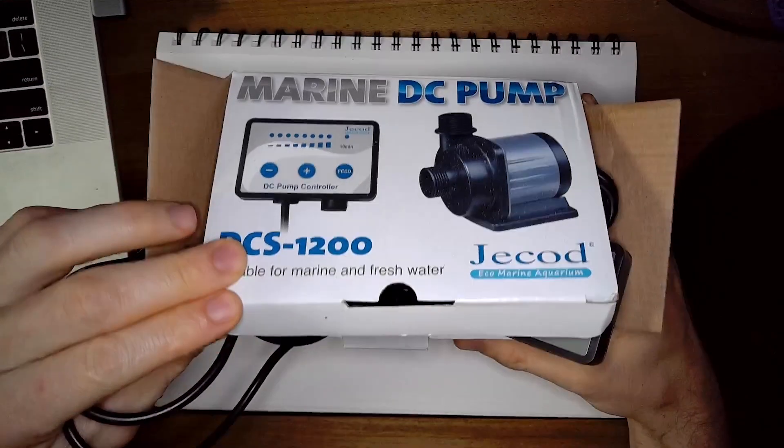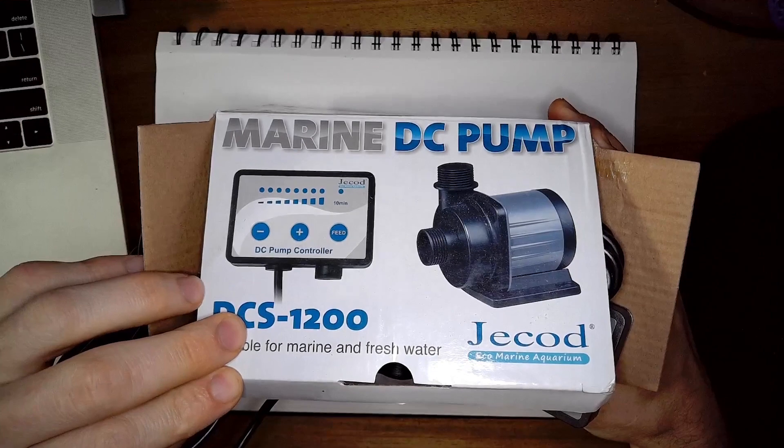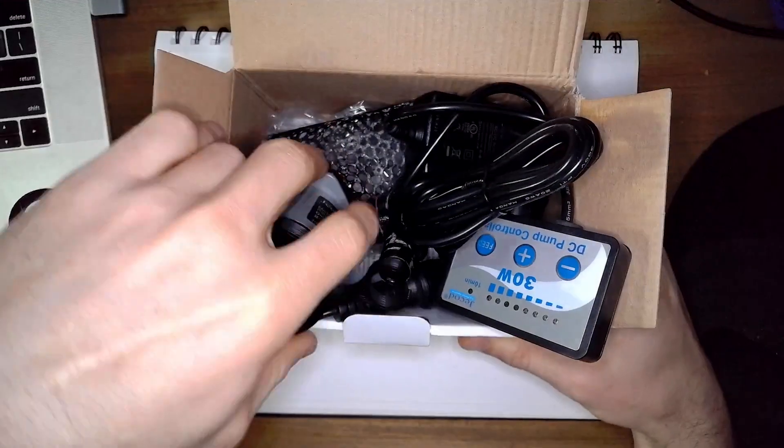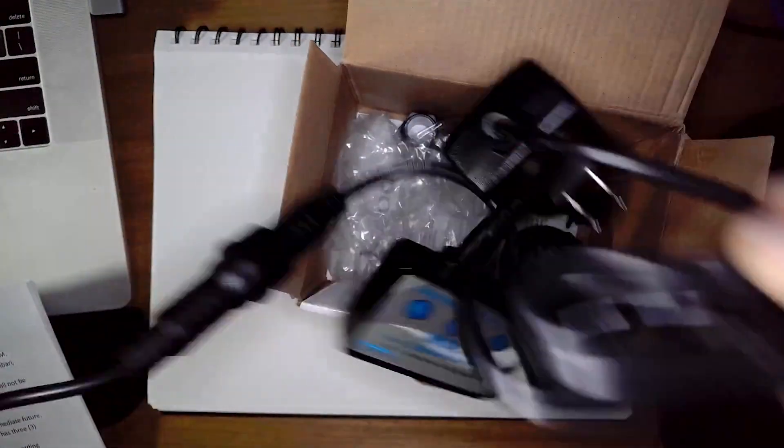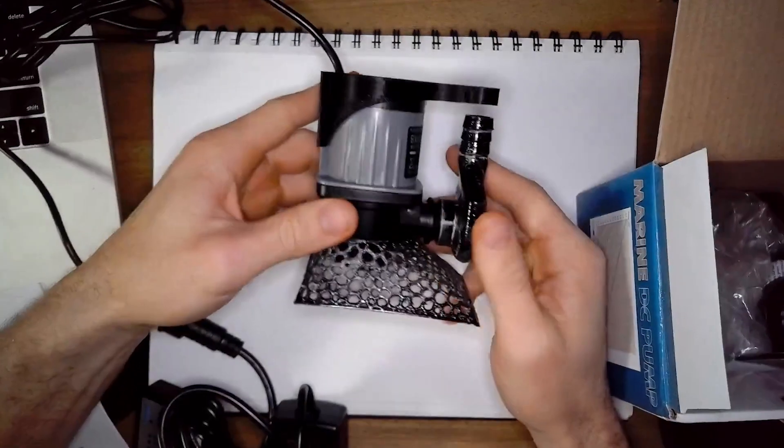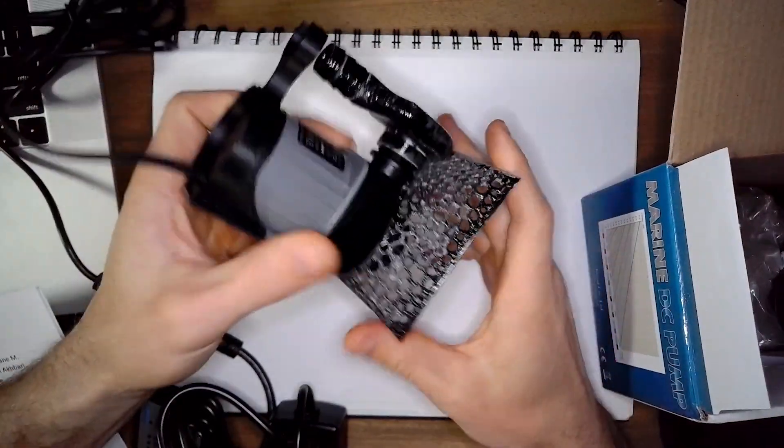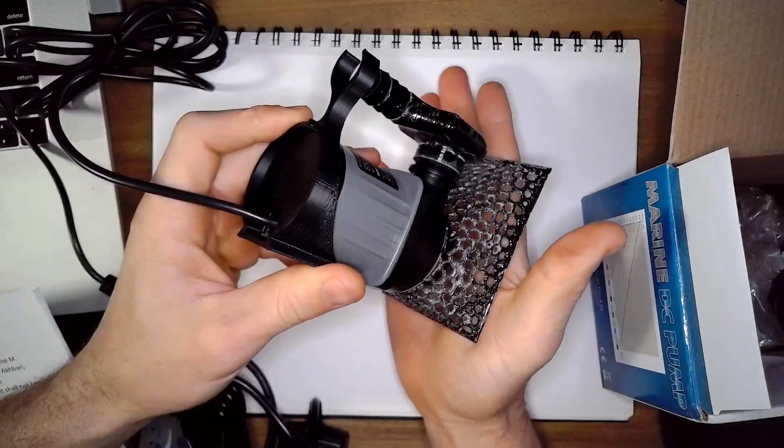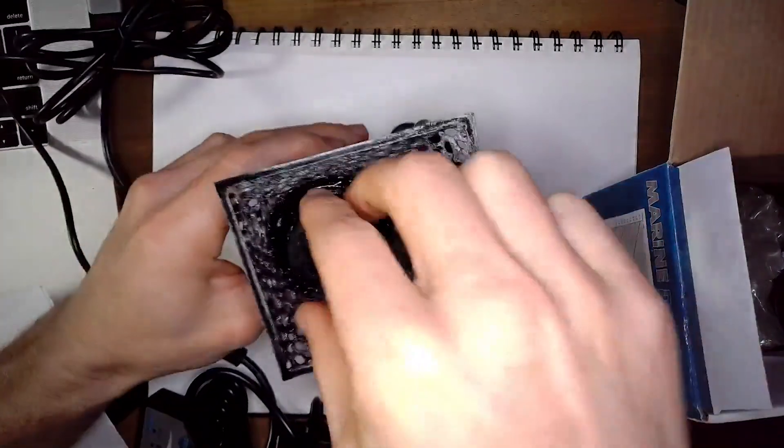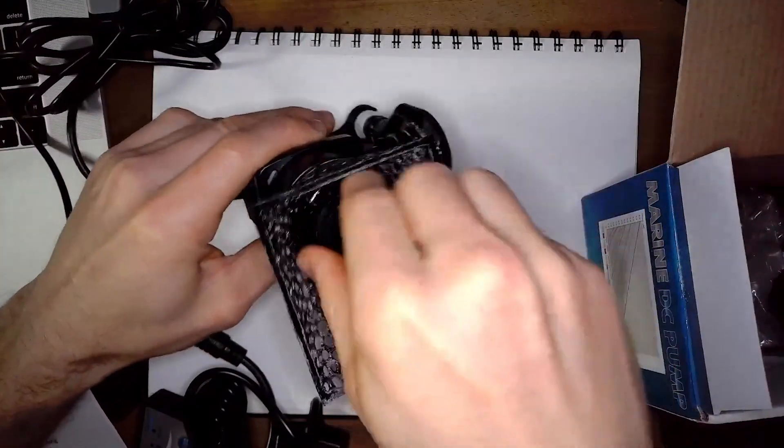Here is the pump, the DCS1200 by Jebao. It's one of the DC controllable pumps. It is brand new, although the box is already open because I've been working on it. So I measured it out. And the only way that this pump is going to fit is if it fits upright. So I had to make something for it to constantly be sitting upright. So I made this little base filter piece with the Voronoi structure.